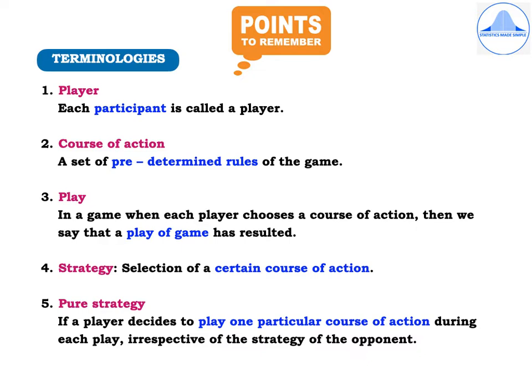Let us now learn some very important terminologies. Player: each participant is called a player. Course of action: a set of predetermined rules of the game is called the course of action. Play: in a game, when each player chooses a course of action, then we say that a play of the game has resulted. Strategy is a selection of a certain course of action.